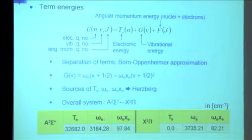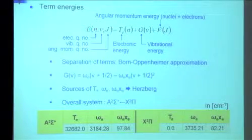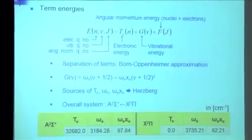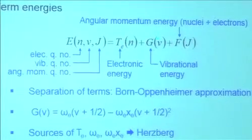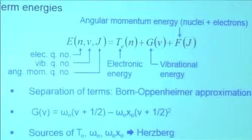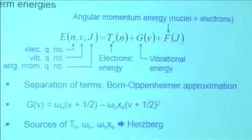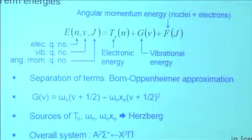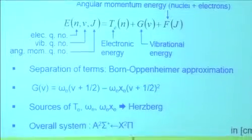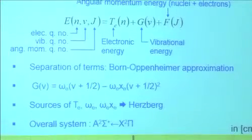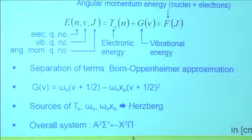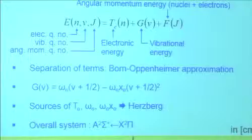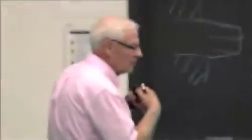We always use term energies. We use N, V, and J for our quantum numbers — here's the electronic energy, vibrational energy, rotational energy. We invoke the Born-Oppenheimer approximation, which says we can separate energy types so that G (vibrational) and F (rotational) are written separately. Born-Oppenheimer just says it's okay to separate the energy of vibration and rotation and add them up — otherwise you'd need an energy that's a mixed function of V and J. You get these numbers out of books; this system has been studied for 100 years.